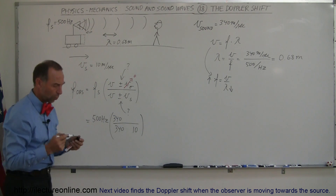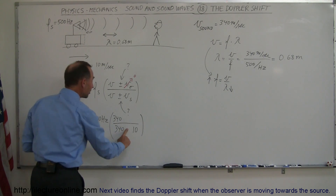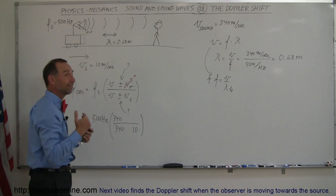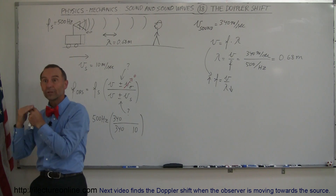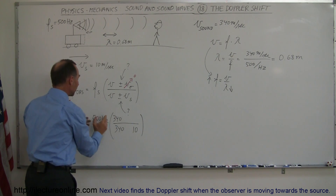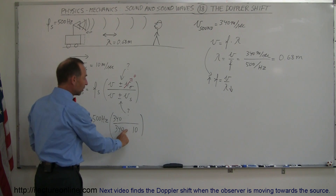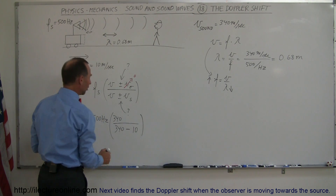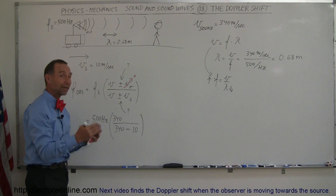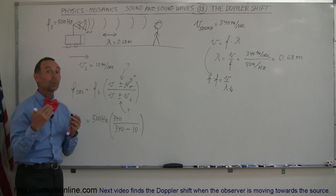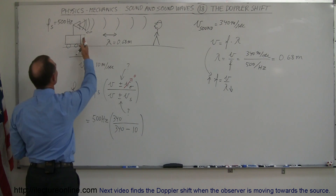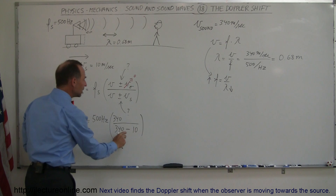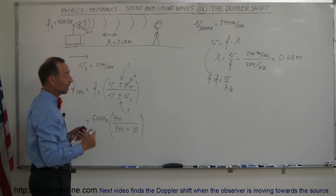The question is: is this going to be plus or minus? The sign depends on whether the observed frequency will be higher or lower. As the object approaches, you'll hear a higher frequency, so we need the denominator to be smaller to make a bigger number — that means we need a minus. So it's 340 divided by 330, giving a number bigger than one, resulting in a larger frequency. If the source drives away, we'd need a plus to give a bigger denominator and lower frequency.